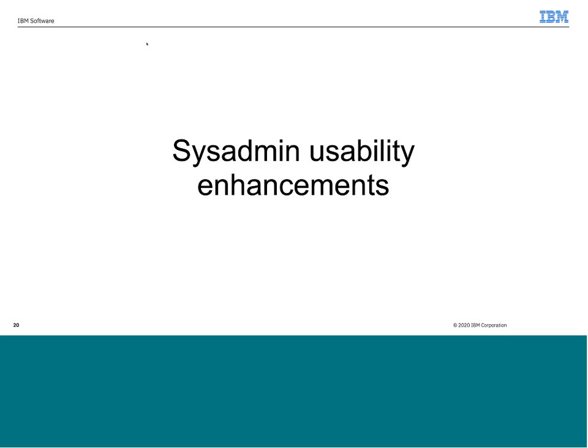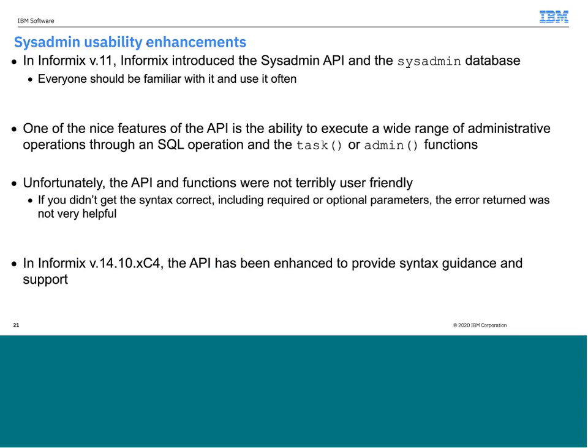SysAdmin — there is some good stuff added here. The SysAdmin API and the SysAdmin database was added in the Informix version 11 timeframe. One of the great features of the API is you can administer practically anything in the instance through an SQL command in conjunction with either the task or the admin functions. Unfortunately, those functions were not terribly user friendly — you might not remember how many parameters you need, and if the parameter string wasn't correct you'd get really awful error messages. In XC4, the API has been enhanced to provide syntax guidance and support for these two functions.